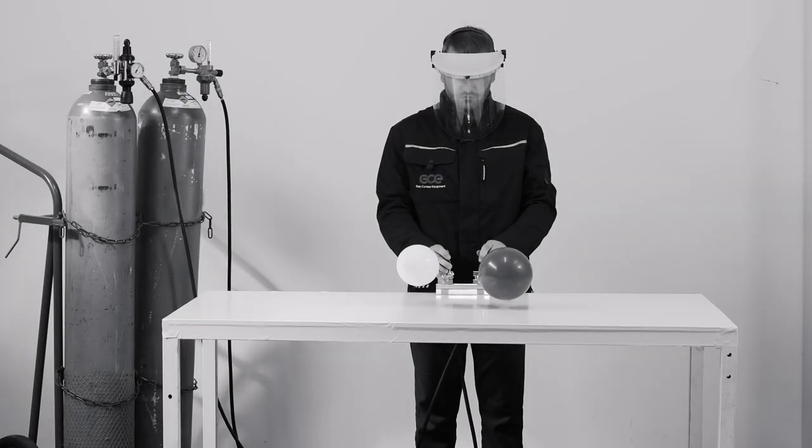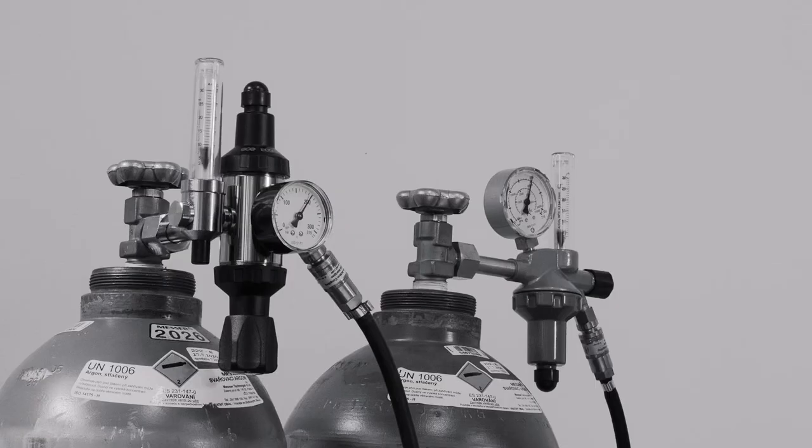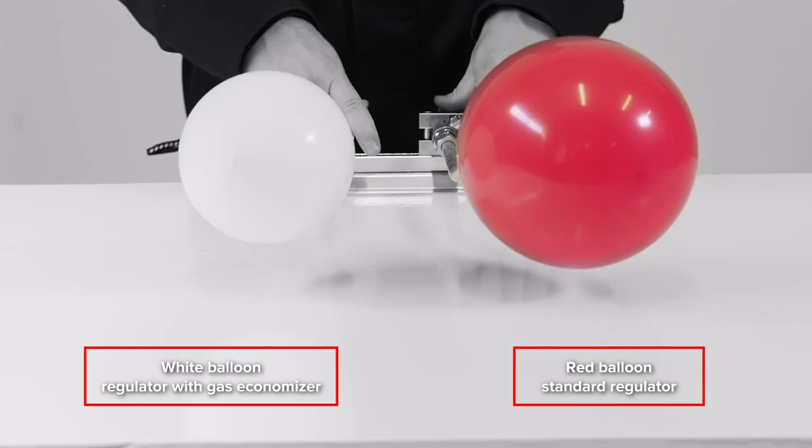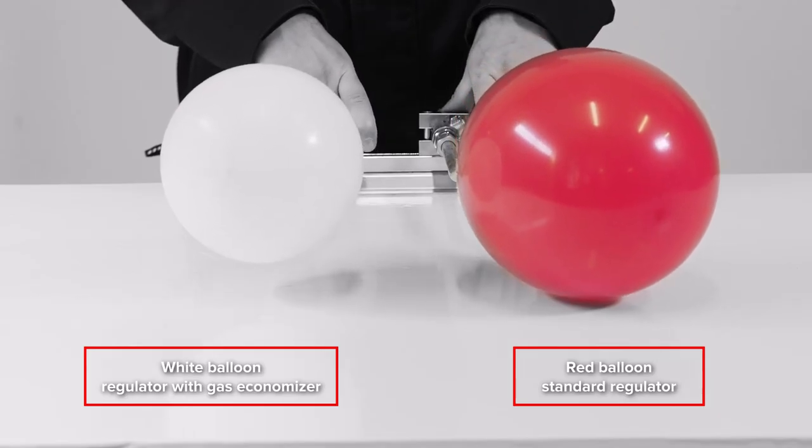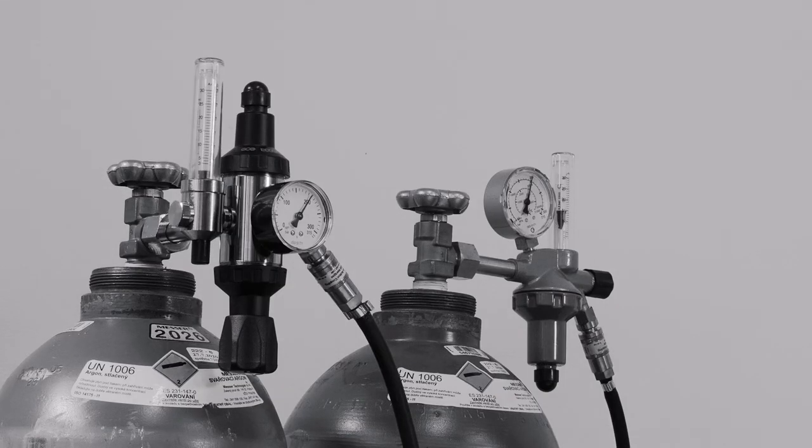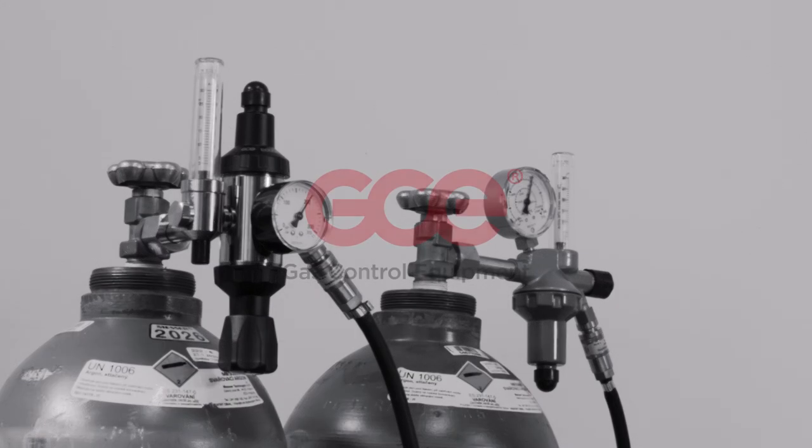The standard regulator has over-pressurized hoses. The extra gas will not be used in the welding process and will be released into the atmosphere. This process is repeated each time the welder stops the welding process.